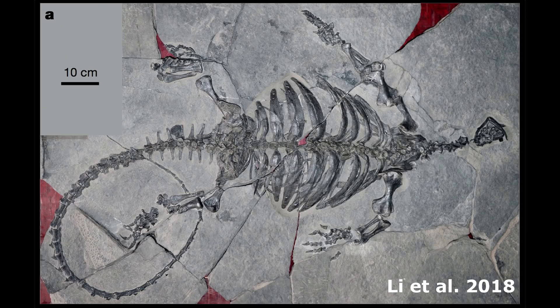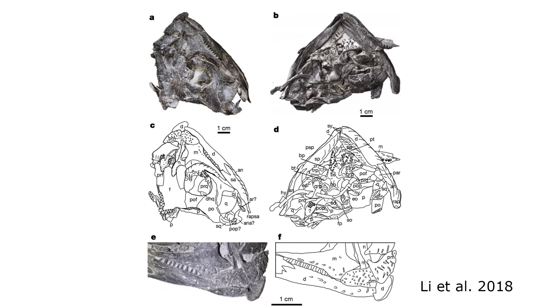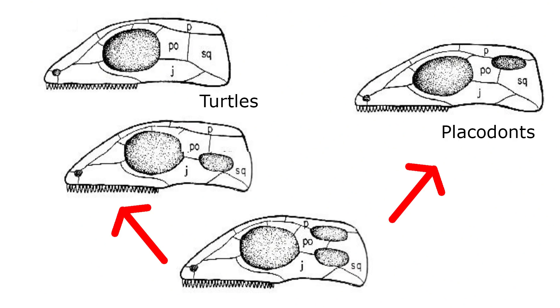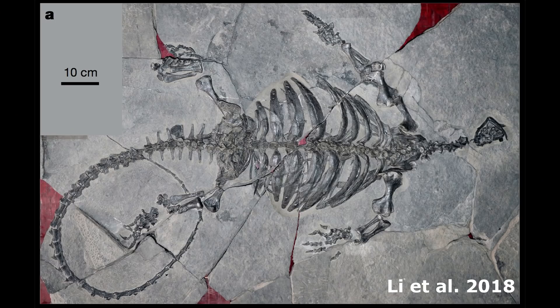The new fossil from China is dated to around 230 million years ago, right between this transition. However, the skull is damaged, and the authors of the paper interpret the skull as having lost the supratemporal fenestra, or the upper hole, and retaining only the lower hole. This is really unusual, since previously it was thought that the lower hole was the first to be lost, given that placodonts only have the upper hole — the euryapsid condition. So this was something very different.